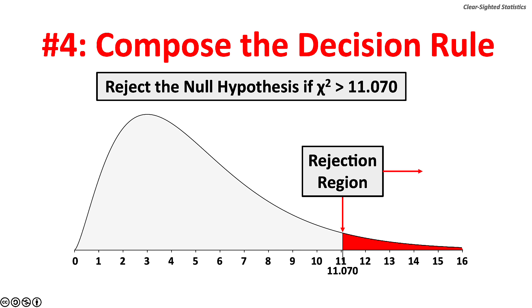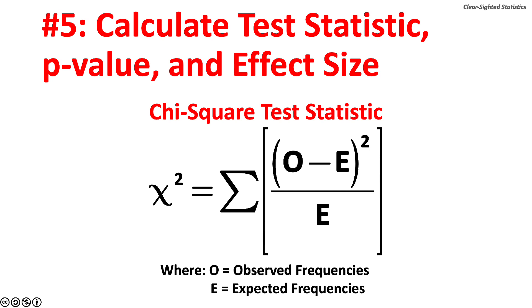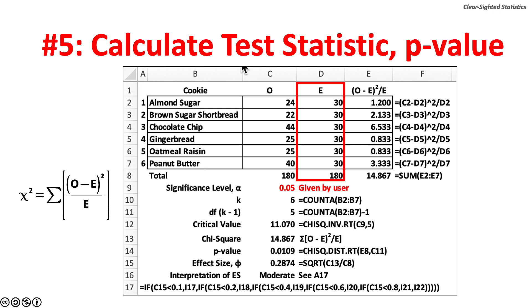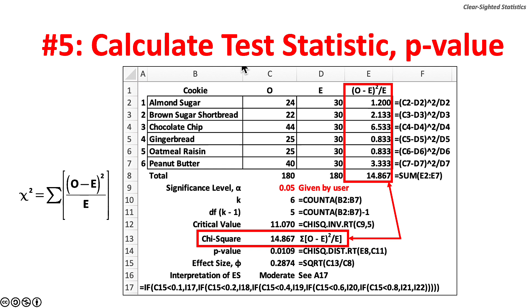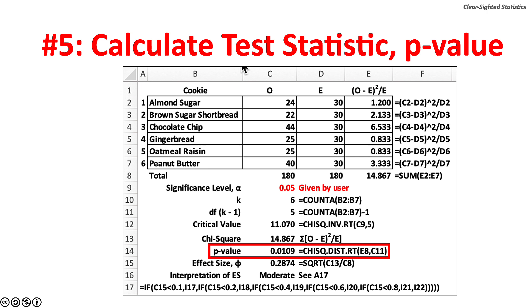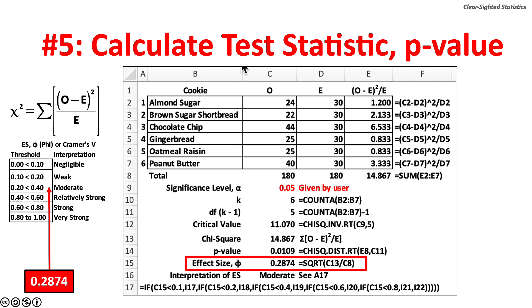Step 5: calculate the test statistic, p-value, and effect size. The expected frequency for each of the six cookie recipes is 30, found by dividing total sales of 180 by 6. The calculated Chi-square test statistic is 14.867. The p-value is 0.0109, or 1.09%. Cohen's W effect size is 0.2874, a moderate effect, very close to the estimated effect size used in the a-priori power calculation.